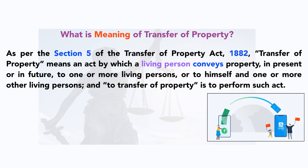This definition is quite complex and lengthy, but don't worry — we will break it into different parts and try to understand. Transfer of property means an act by which a living person conveys property. A living person could be anything: it could be a human being, it could be a corporate entity such as a company, it could be an association, it could be a firm, or it could be a trust. So everything can be considered a living person.